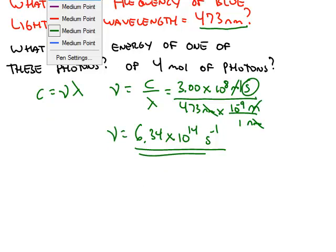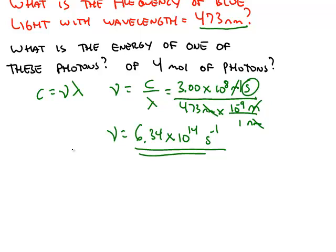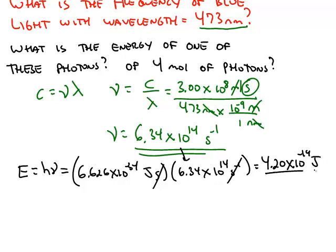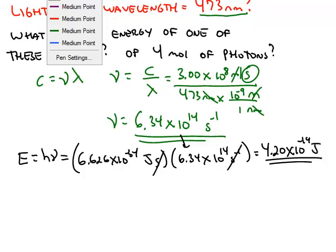Once we have the frequency, we can answer the second question: what is the energy of one of these photons? We use the formula E equals h times nu, substitute in Planck's constant and the frequency. Seconds cancels inverse seconds, and this gives us an energy of 4.2 times 10 to the negative 19th joules — the energy of just one photon.